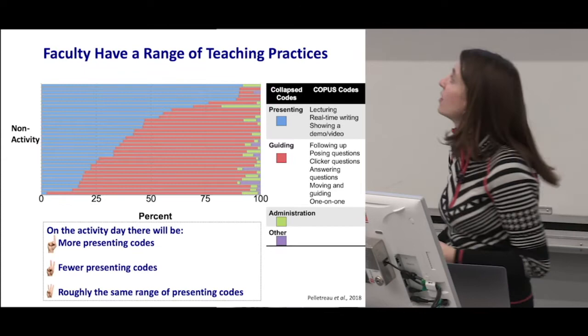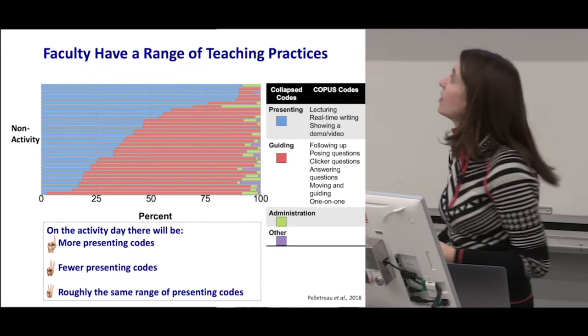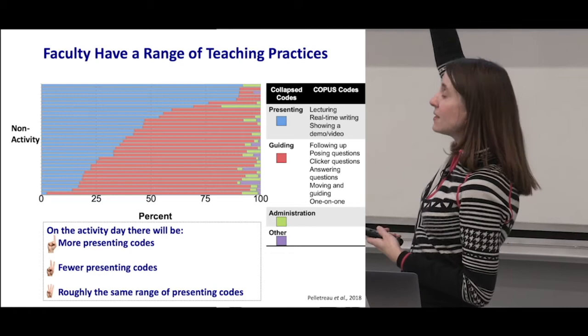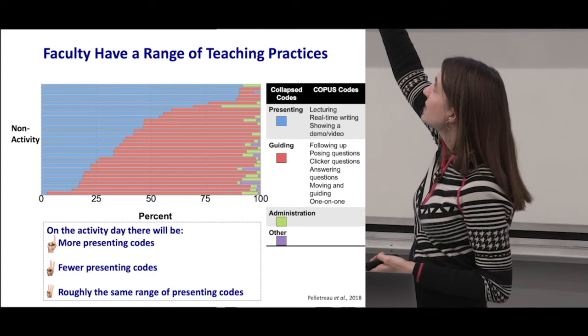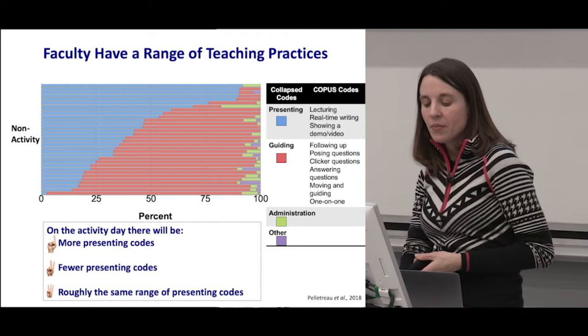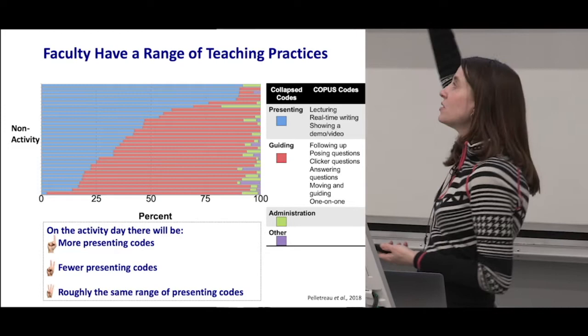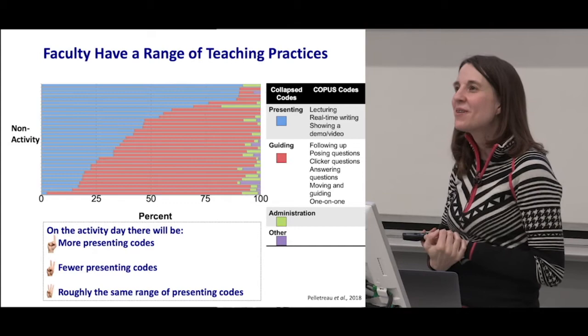We used these collapsed codes to see what was going on in the classrooms of our instructors on non-activity days. The percent along the x-axis is the percent of each code. Each strip across is a different class observation. The purpley-blue color is presenting and the reddish color is guiding. My question to you: what do you think you will see on the activity days — more presenting codes, fewer presenting codes, or roughly the same range?